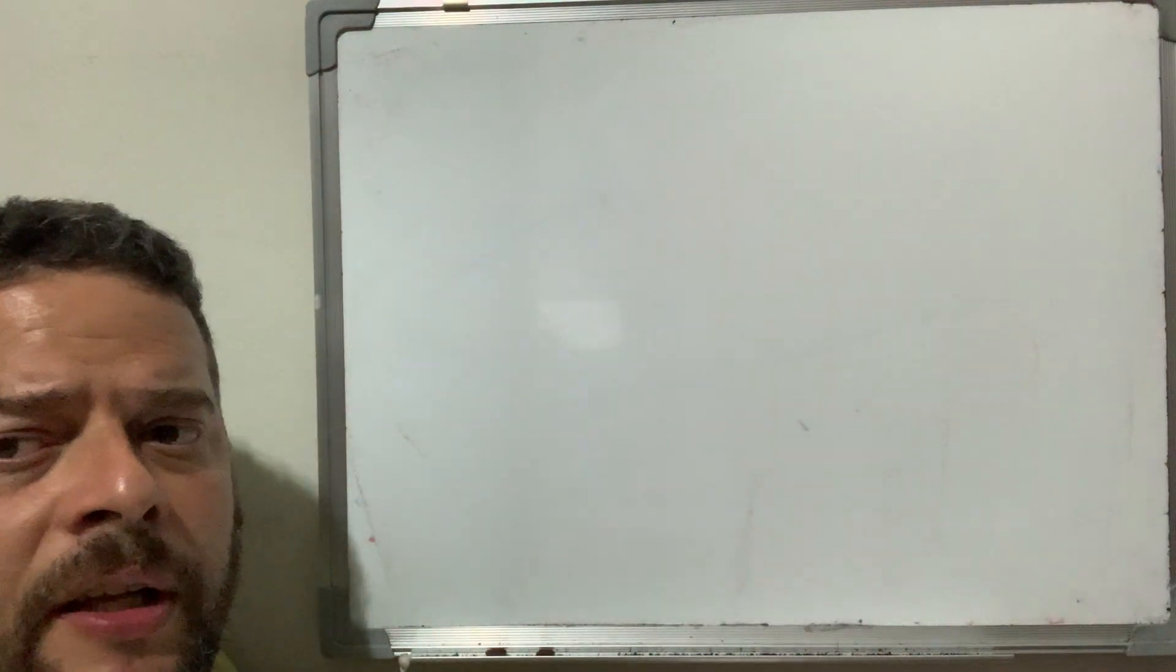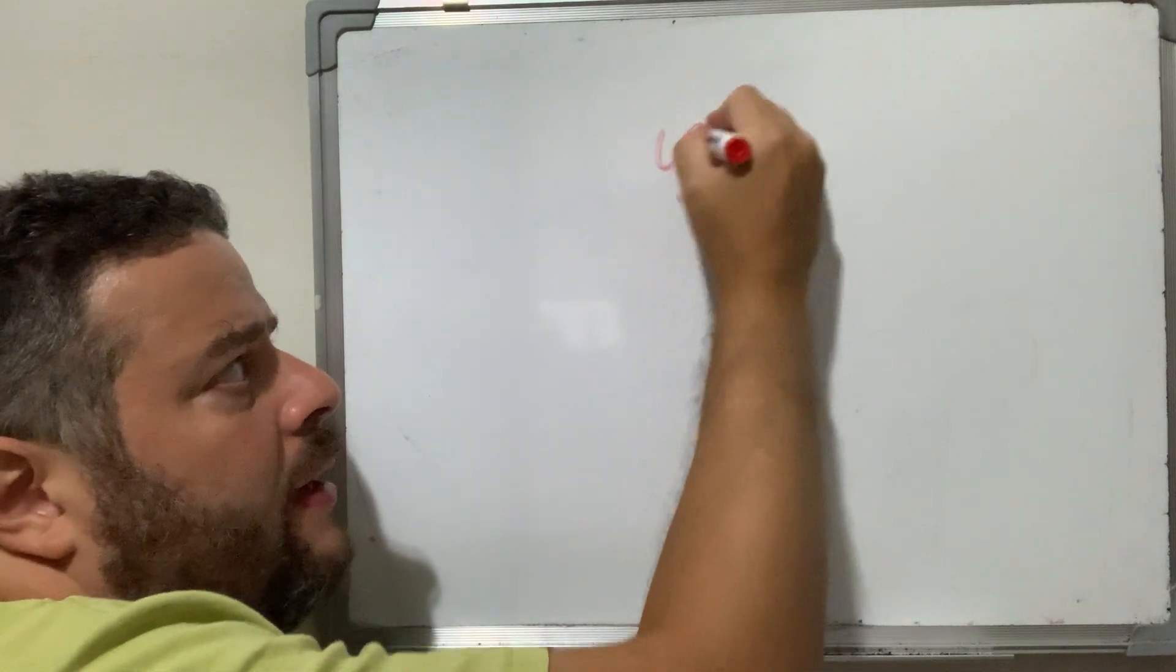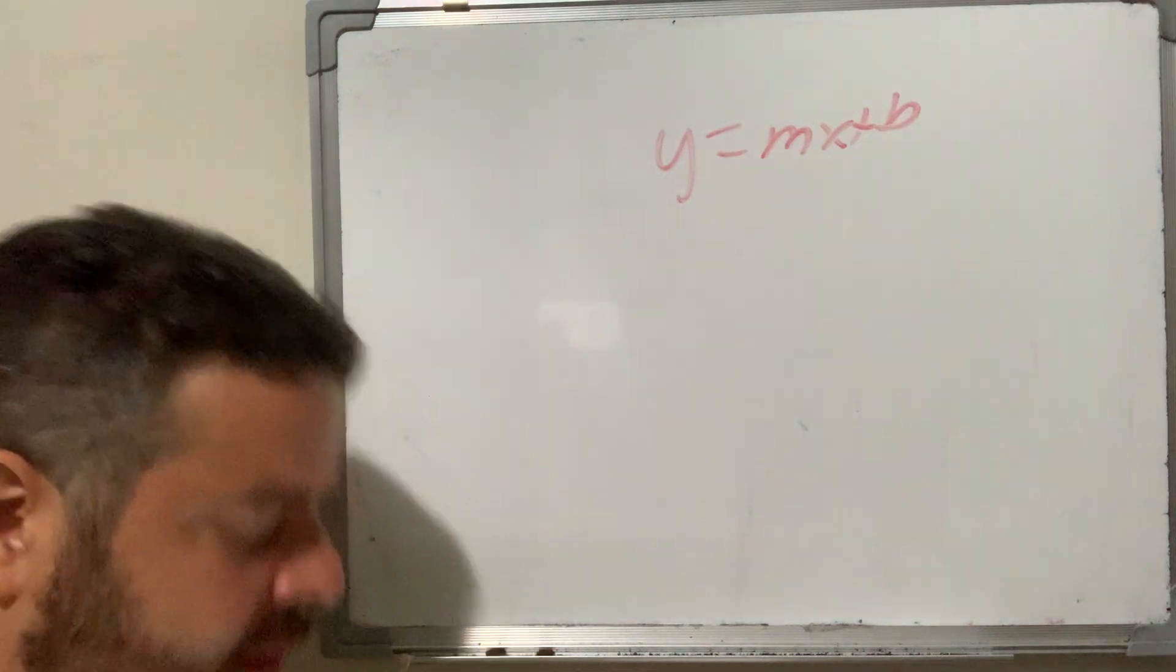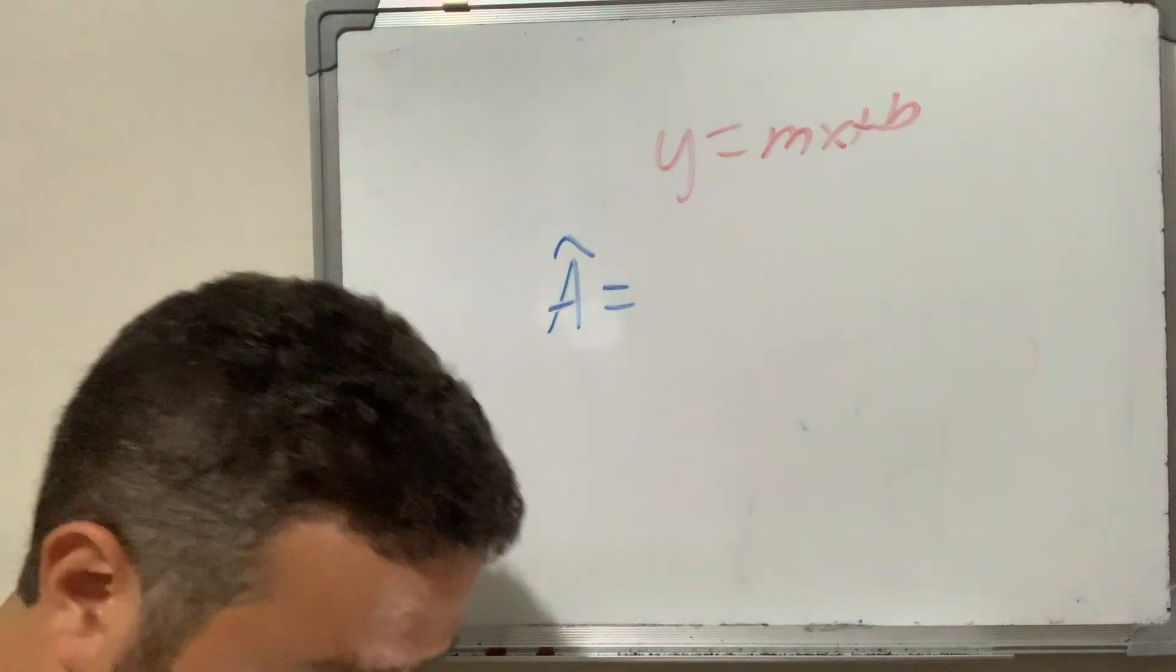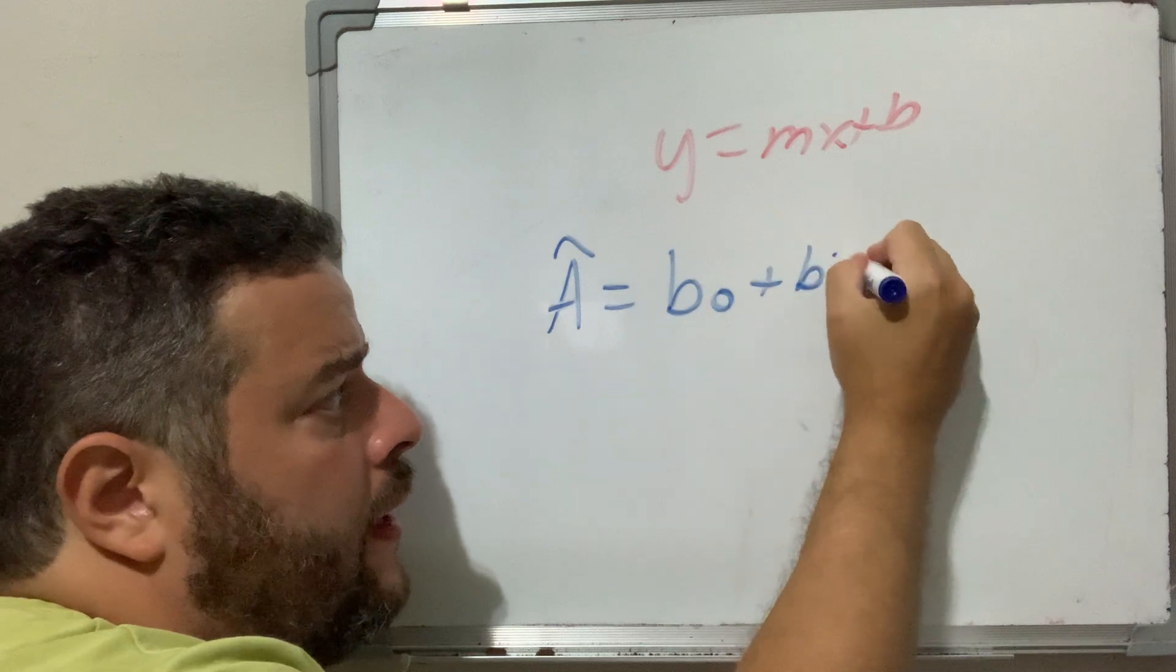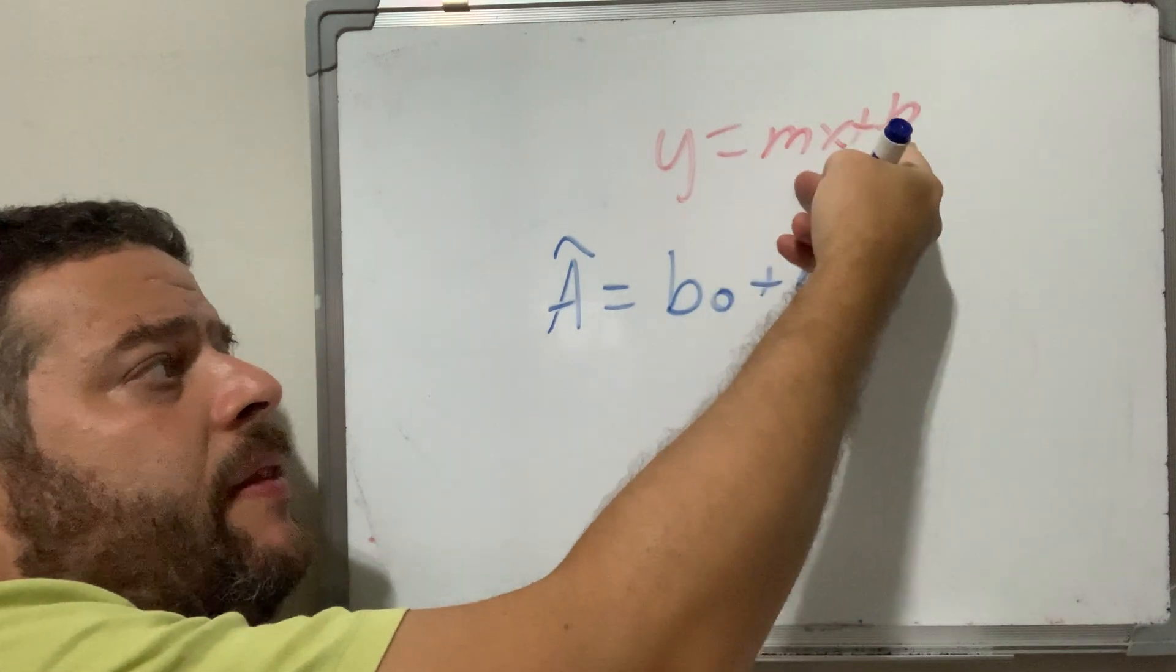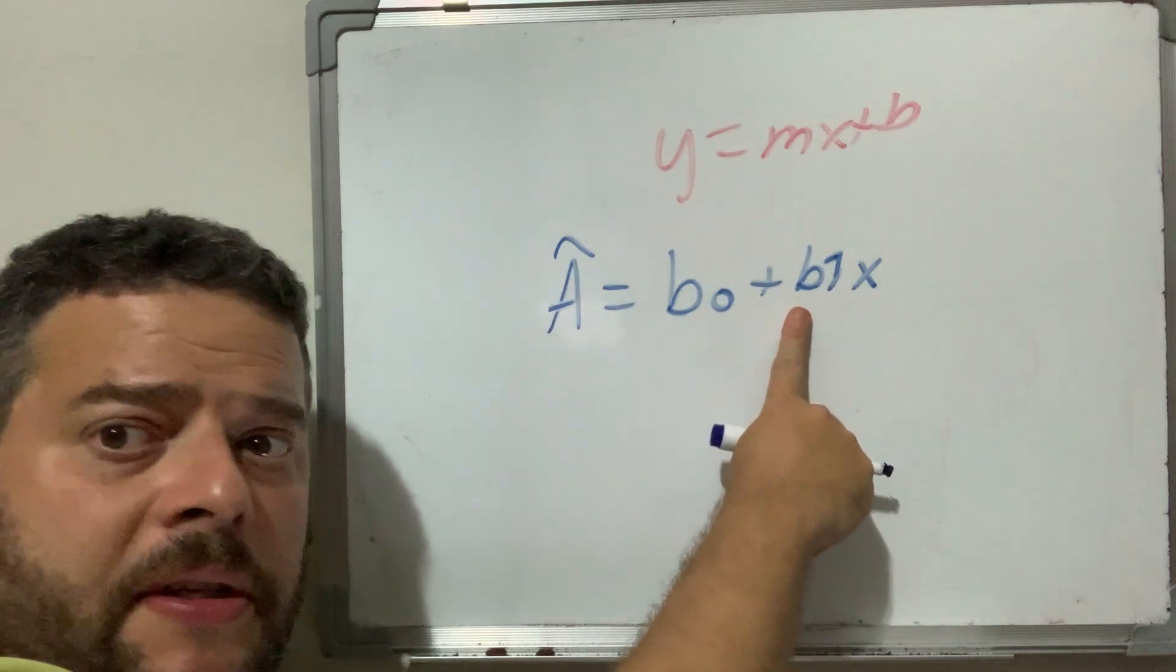It follows the linear equation for the linear equation parent function, which is y equals mx plus b, where b is the y-intercept and m is the slope. The only difference here is that it's called y hat, which means regression line equals b0 plus b1x. They flipped these two. This is still the y-intercept, and this is still the slope, but the exact same deal.